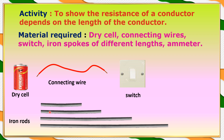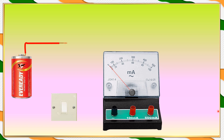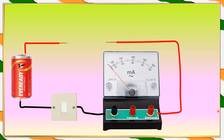The lengths are 10 centimeters, 20, 30, 40, and so on. This is an ammeter, which measures current in milliamperes in the circuit. Now I will make a circuit here — a dry cell, a switch, and an ammeter connected in series. In this circuit, I have left a gap where I am going to place iron spokes of different lengths having the same cross-sectional area.